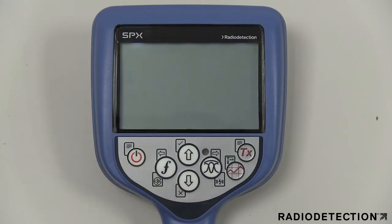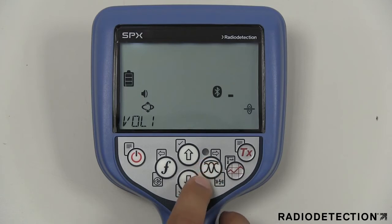There are 16 menu options available on the Precision Locator range that all follow the same format. The Vol menu option allows you to adjust the speaker volume from 0 to 3.